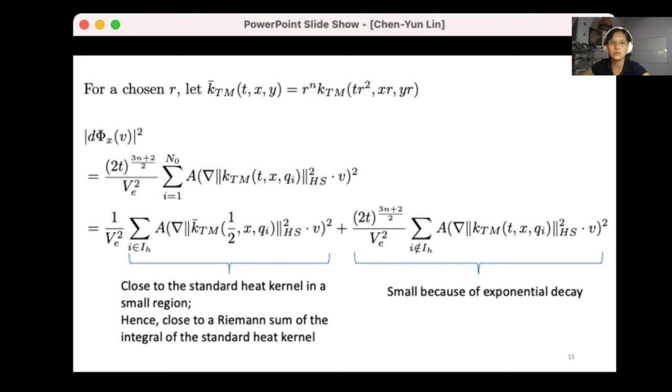And then if i is not in the set I, that means qi is far away from x. So let's look at the second term, this one on the right. Because we know that the gradient of the heat kernel has exponential decay, therefore you can see the whole thing will be small. You can control this by ε, you can bound this by ε.